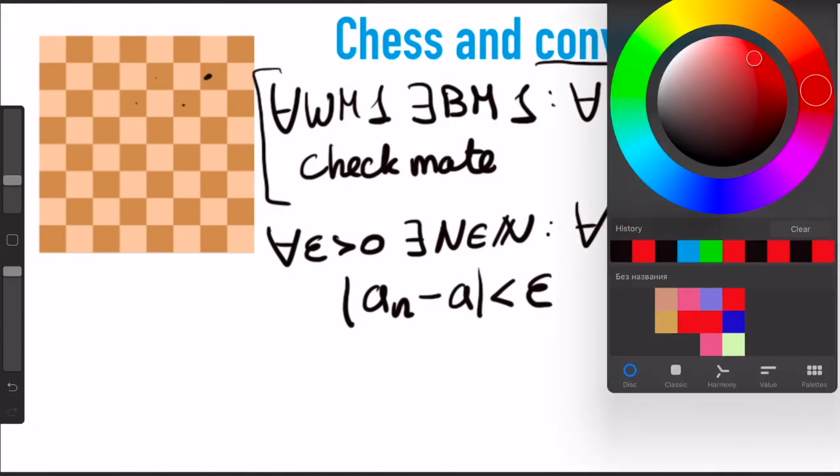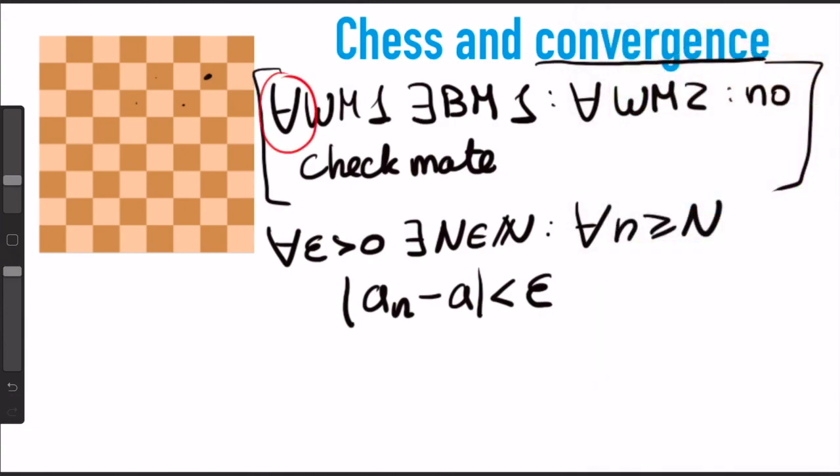And here is what's peculiar: the sequence of logic operators is the same. In other words, if you cannot checkmate someone in two moves, it is the same as when some sequence converges to a limit.